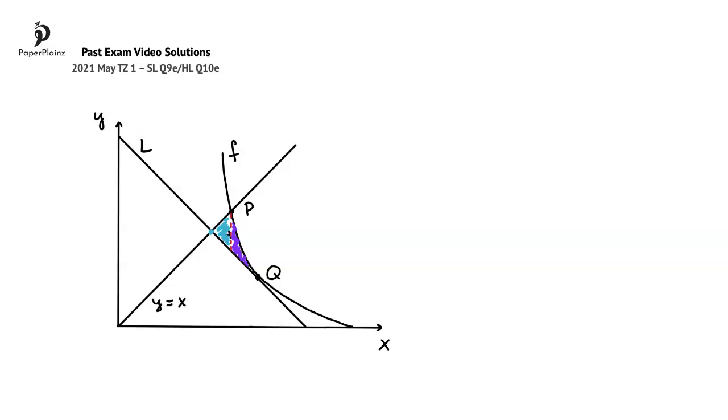In this question part, we are told that L is also tangent to the graph of the inverse of F, and we have to find the area enclosed by F, the inverse of F, and L.